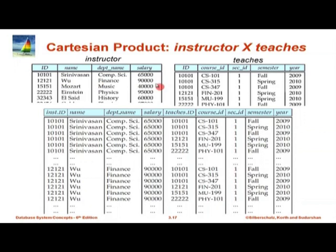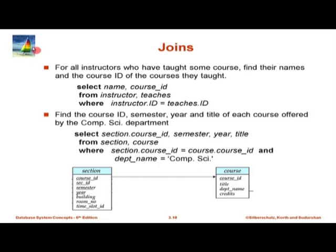The Cartesian product of instructor and teaches can be very big — if there are 500 instructors and teaches had 10,000 tuples, we are looking at 5 million rows. What you really want is a join where there is a condition. So here instead of taking a cross product of instructor and teaches, we ensure that instructor.id equals teaches.id. This query finds: for all instructors who have taught some course, find their names and the course_id of the courses they have taught. Note the English form of this query is made unambiguous by saying 'all instructors who have taught some course' — because if we just said 'all instructors', it would be unclear what to do for instructors who have not taught a course.